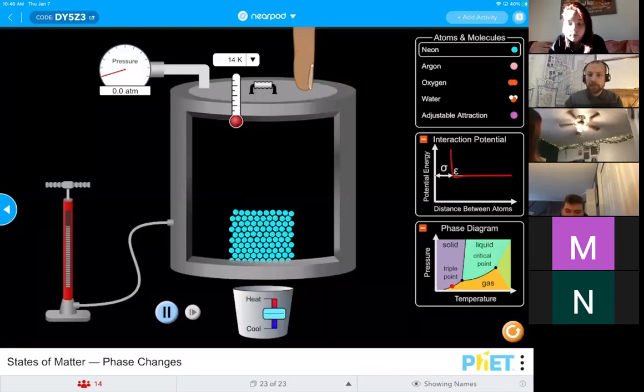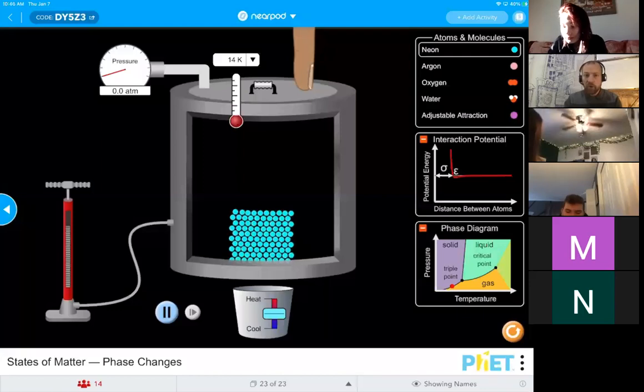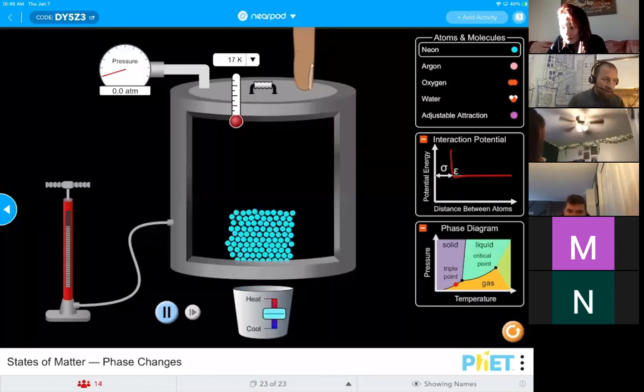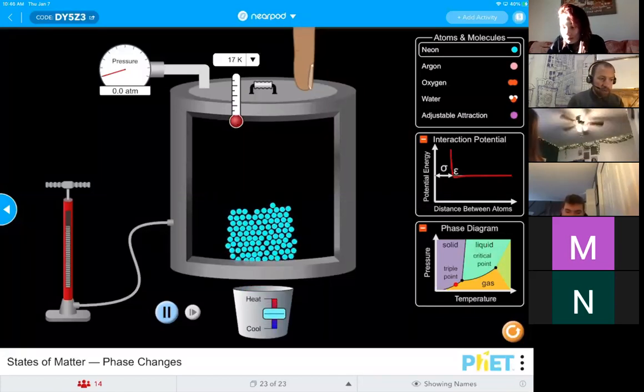Inside this chamber, I have solid ice. I know that it's solid because it has a definite shape, and it has a definitive volume. What I can do is I can increase the temperature, which you'll see is making those particles vibrate much faster.